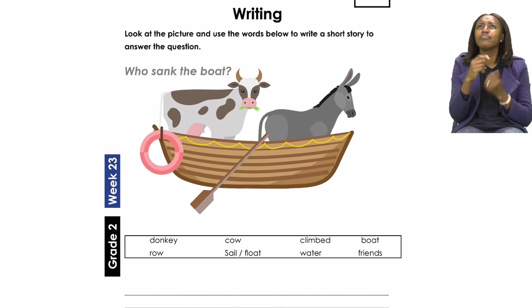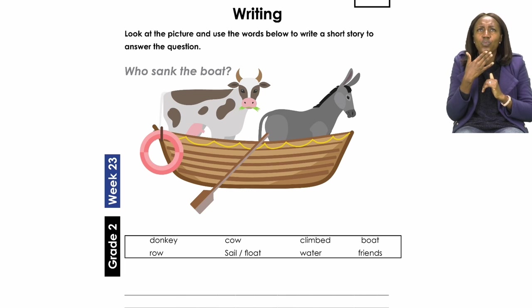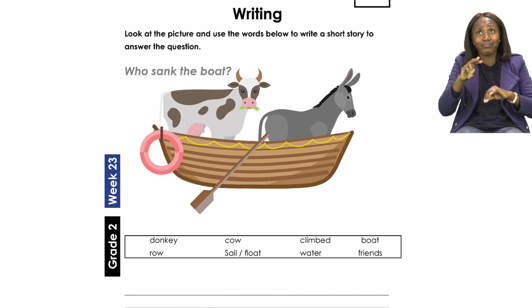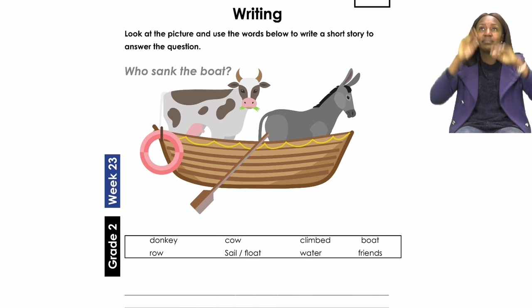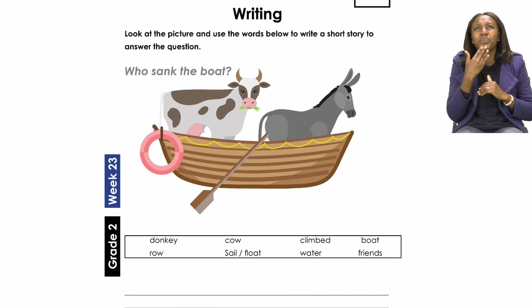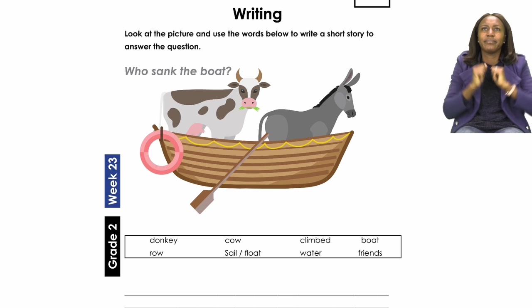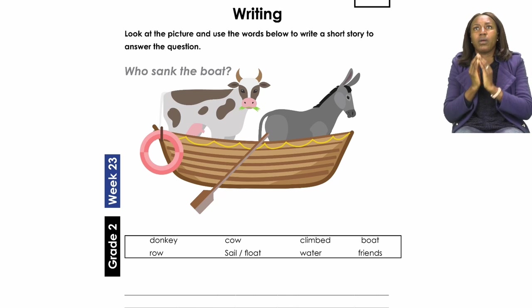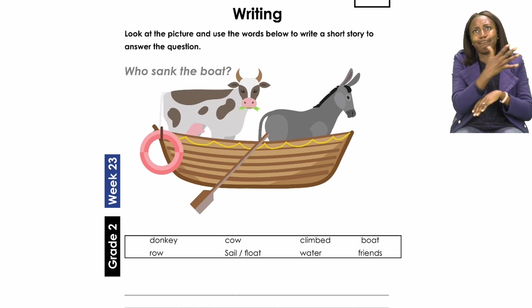I'm not sure which one is heavier, but we can definitely make our own conclusions. We have two animals in the boat — a cow and a donkey. The question is: who sank the boat? In order to do our writing and answer that question, we need to use the words in the box. We have the words: donkey, cow, climbed, boat, row, sail, float, water, and friends.